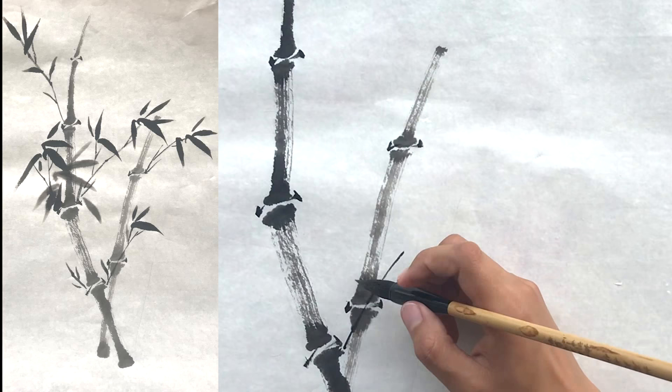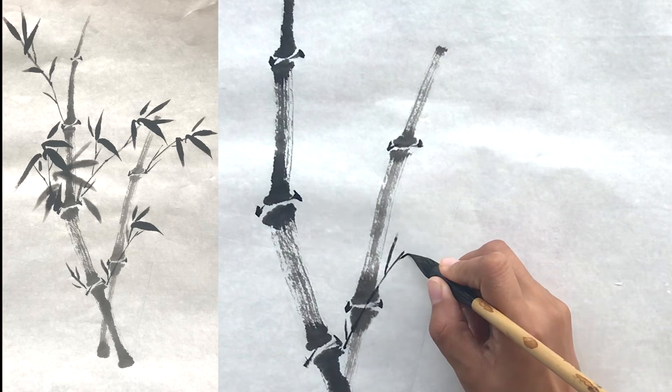Then paint a shorter one off this branch. Just use the tip of the brush to paint the same branches.